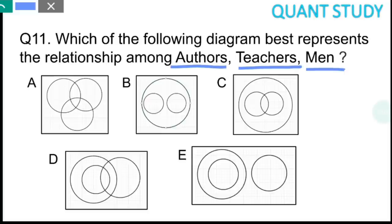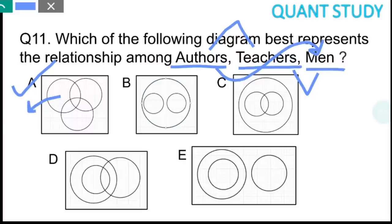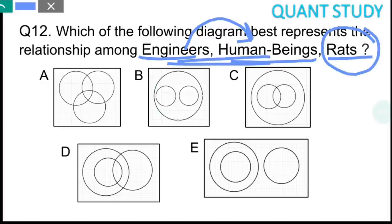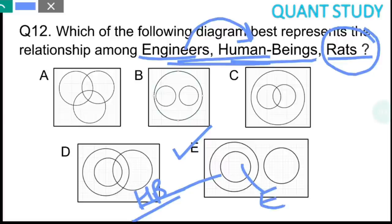Question 11: The words are authors, teachers, and men. Some authors can be men, some women; some teachers can be men, some women; and some authors may also be teachers. So all three circles overlap partially. The correct Venn diagram shows three overlapping circles. The answer is option A. Question 12: Engineers, human beings, and rats. Engineers are entirely within the set of human beings, and rats have nothing in common with either. So the Venn diagram has an outer circle for human beings, an inner circle for engineers, and a completely separate circle for rats. The answer is option E.